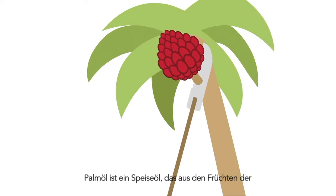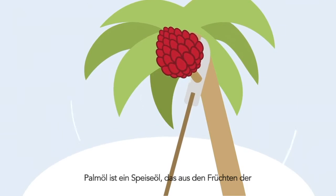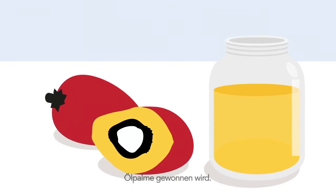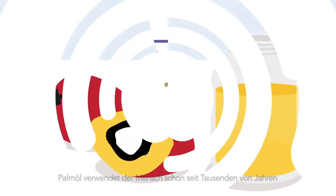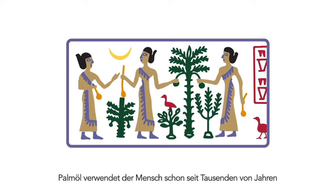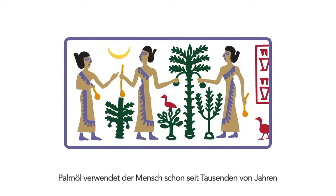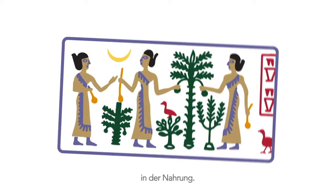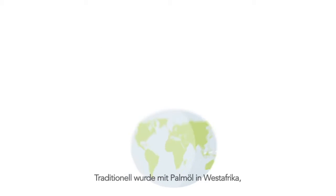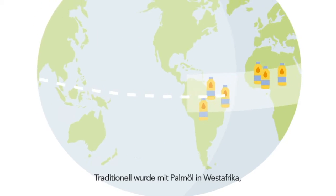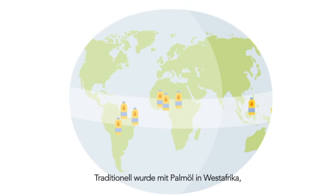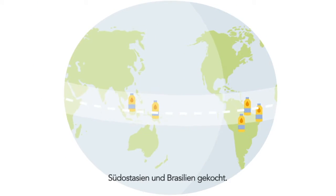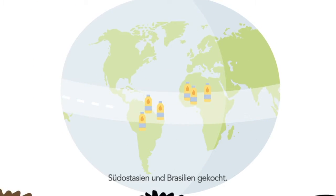Palm oil is an edible oil produced from the fruits of the palm oil tree. The use of palm oil in our diet dates back for thousands of years. Traditionally, palm oil was used as a cooking oil in West Africa, Southeast Asia and Brazil.